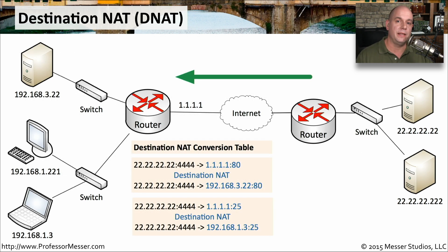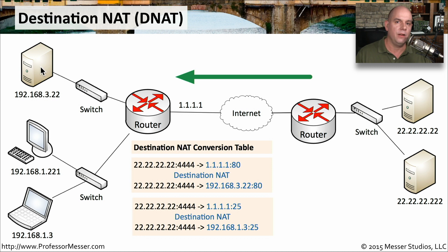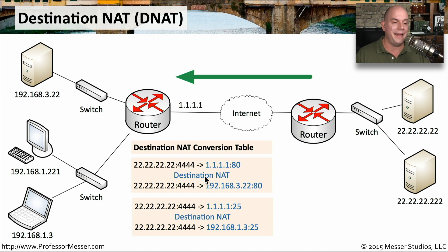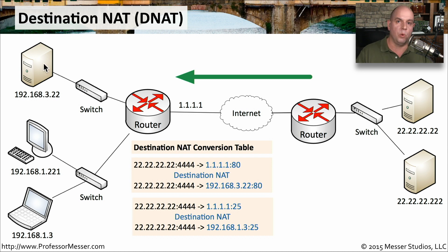Here's the same network diagram, but flipped. We now have traffic originating on the internet making its way to 192.168.3.22, which in this example is our internal web server. The device at 22.22.22.22 is communicating over port 4444 to well-known port 80 of 1.1.1.1 — the external address of our router. When that traffic is received by the router, it performs a destination NAT, changing the destination from the external address to 192.168.3.22, keeping port 80 the same since that device is listening on port 80 for web services.